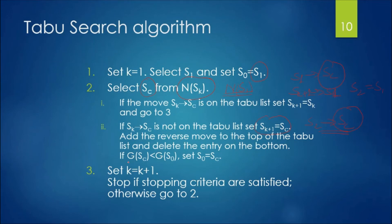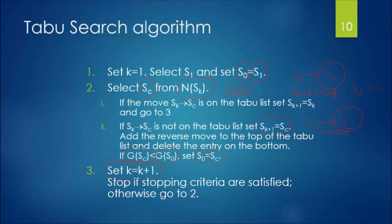If the objective function of sc is less than the objective function of s0, we set s0 = sc, always keeping the best solution at hand. Then k is incremented to k+1. If the stopping criteria is met we stop; otherwise we go back to step 2, generate the next neighborhood solutions, and this is how the Tabu Search algorithm works.